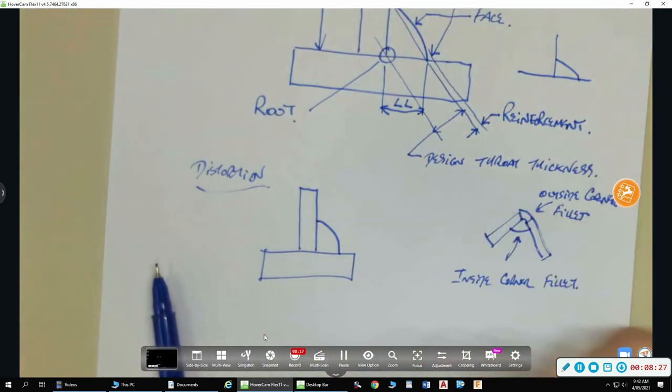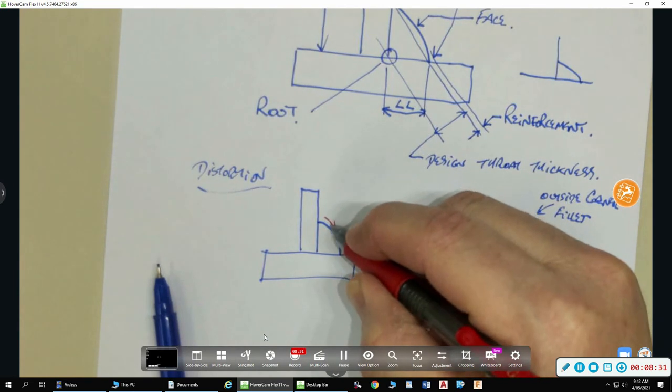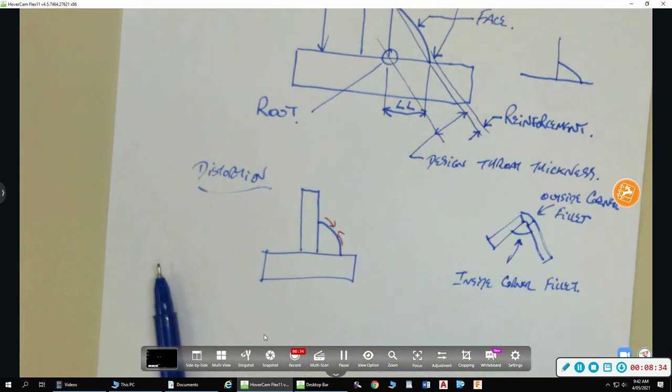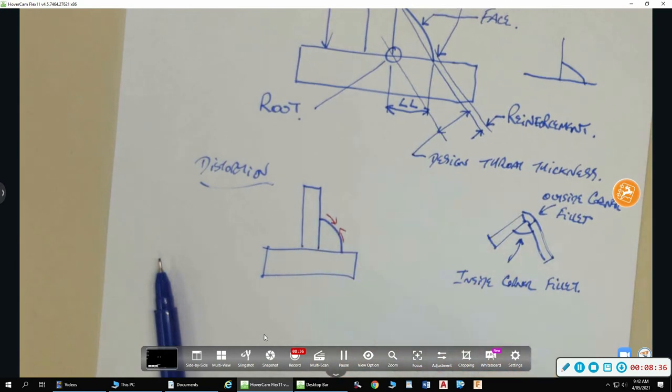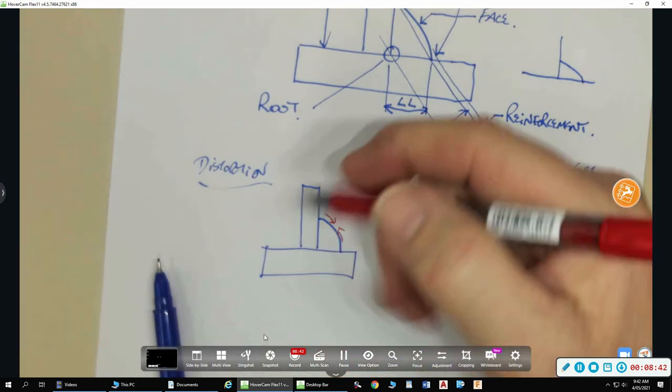Now, again, the surface of that weld, just like on the butt weld, the surface is going to contract and distort and pull. And it's going to contract this way. Is it going to want to go, is the weld, is this plate here at the top, is it going to want to go that way or that way? To the right. To the right, isn't it? It's going to pull like that.